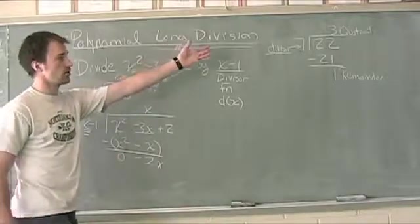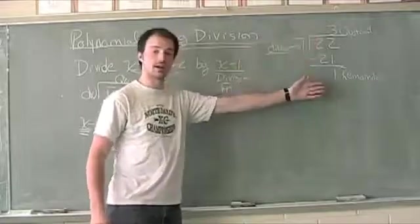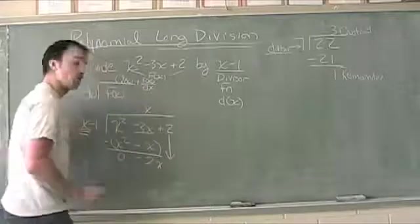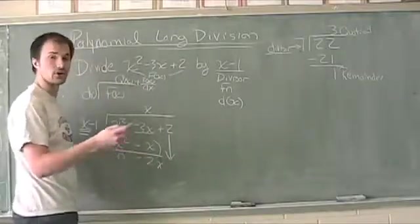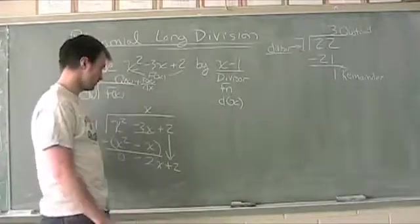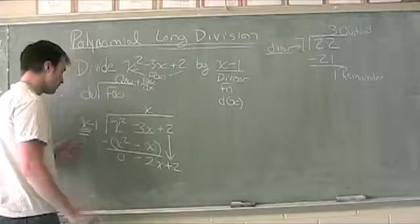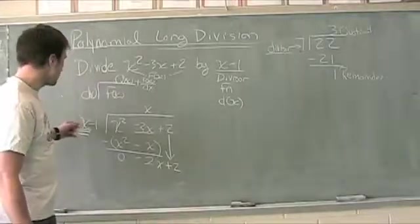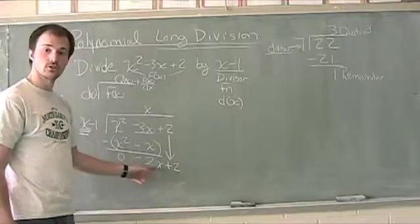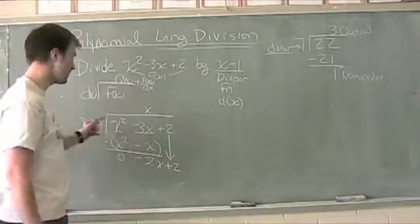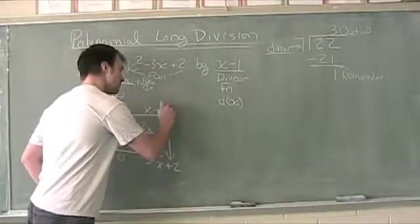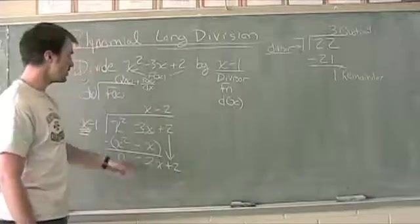If this were a longer long division, we would bring down another place value. We're going to do the same thing and bring down another term, so this becomes negative 2x plus 2. Now we repeat the process. We ask ourselves what times x would give me negative 2x? The answer is negative 2.